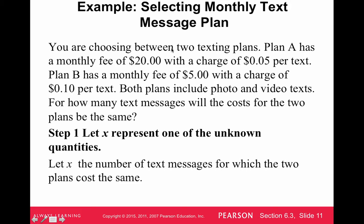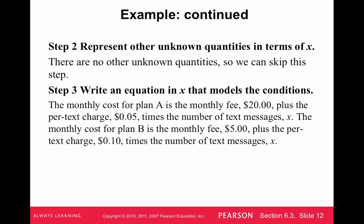You're choosing between two texting plans. Plan A has a monthly fee of $20 with a charge of 5 cents per text. Plan B has a monthly fee of $5 with a charge of 10 cents per text. Both plans include photo and video text. For how many text messages will the cost of the two plans be the same? That's what we'll let x be — the number of text messages. The monthly cost for Plan A is the flat fee of $20 plus 5 cents times the number of texts. For Plan B, it's $5 plus 10 cents times the number of text messages.